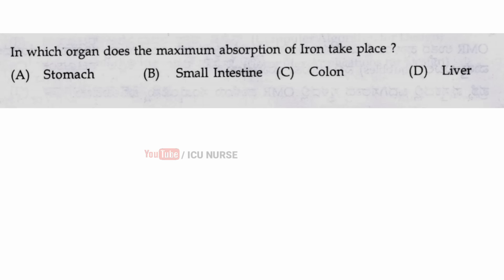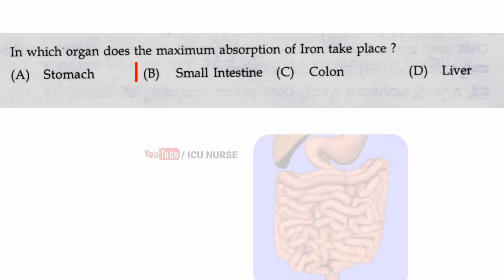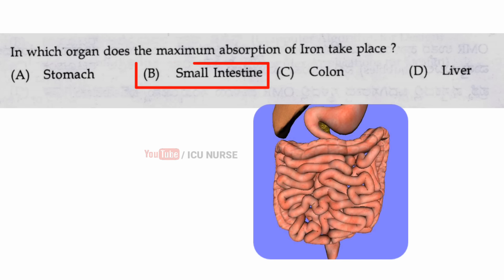In which organ does the maximum absorption of iron take place? The correct answer is B, small intestine.